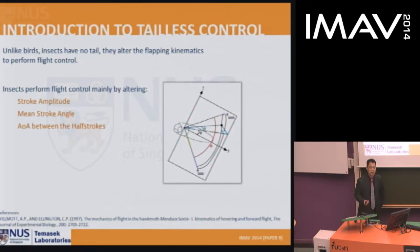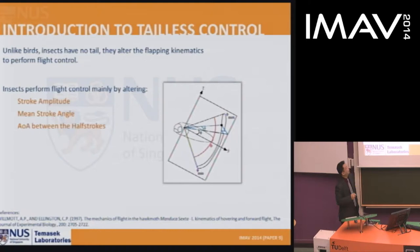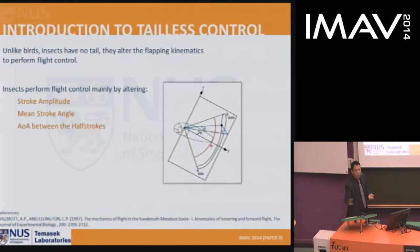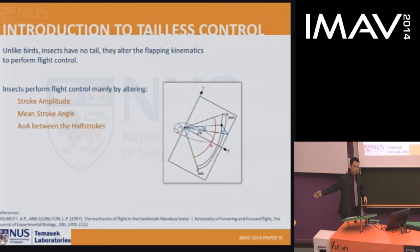Unlike birds, insects have no tail and alter their flapping kinematics to perform flight control. There are three main methods insects use: altering the stroke amplitude, altering the mean stroke angle — flapping more on the dorsal or ventral side to create a pitching moment — and changing the angle of attack between half strokes. By changing the angle of attack of the downstroke and upstroke, they create an unbalanced moment that enables yaw.